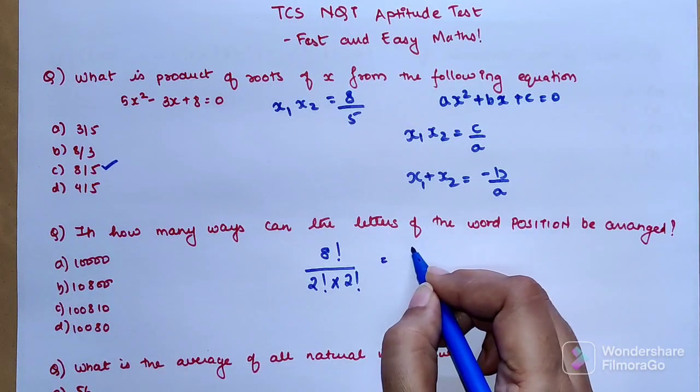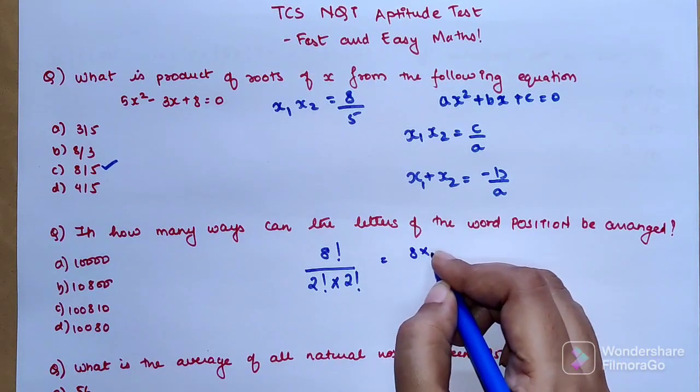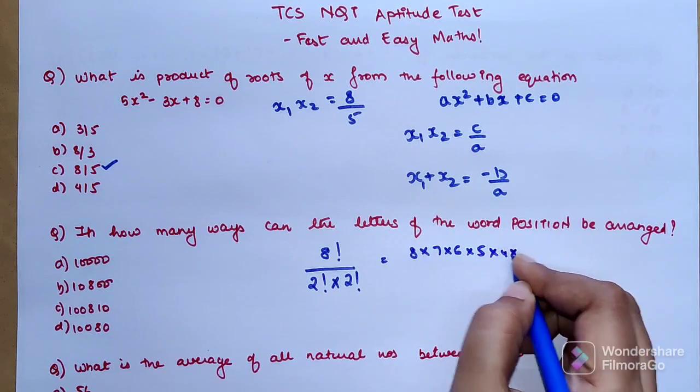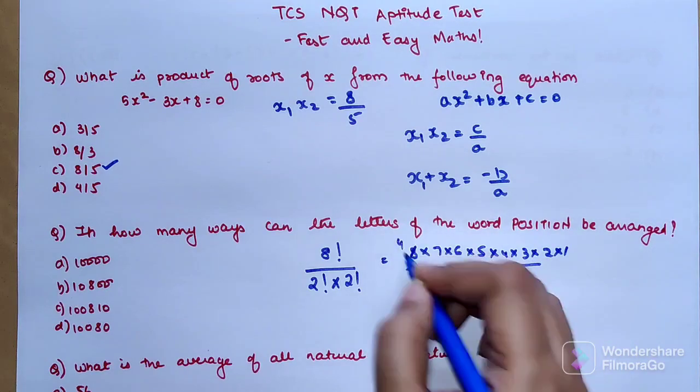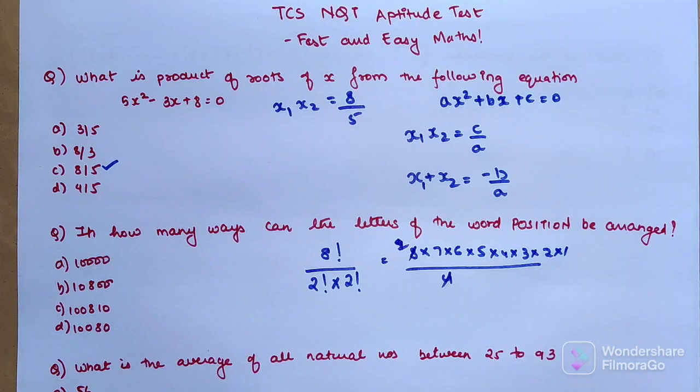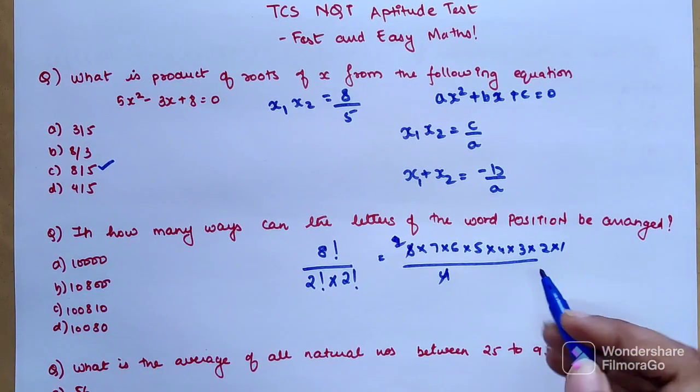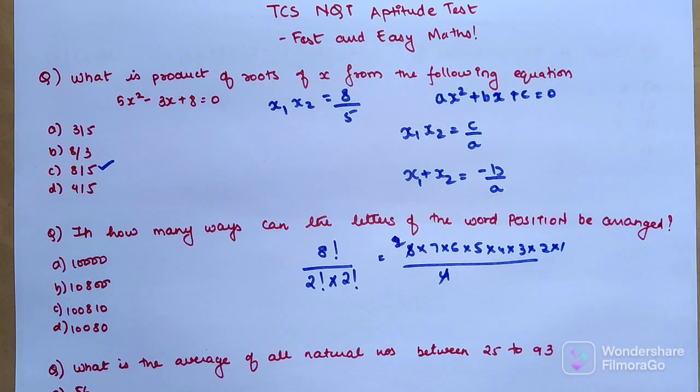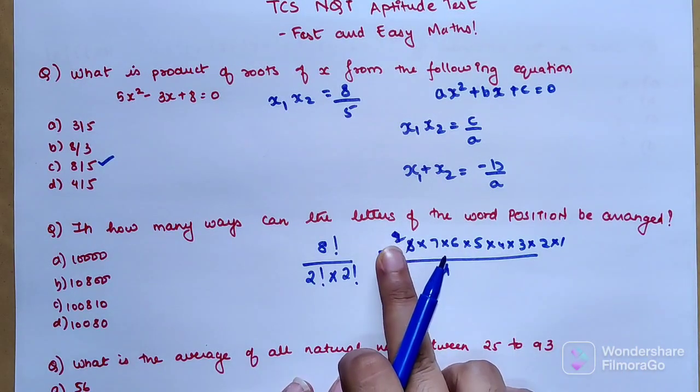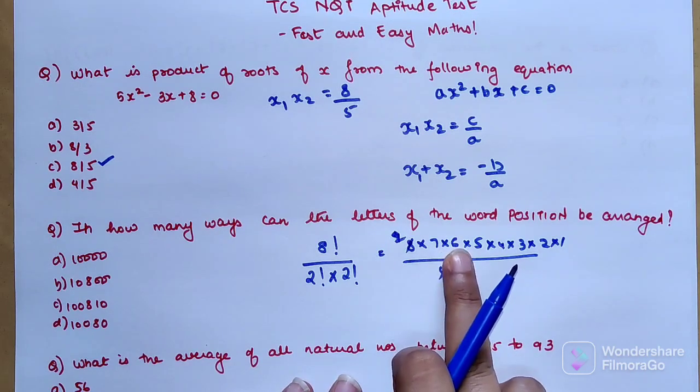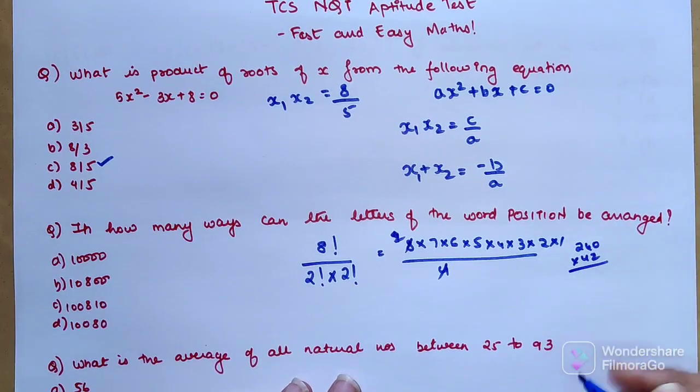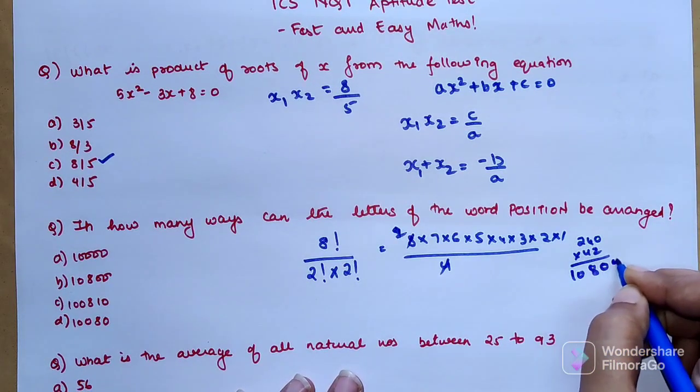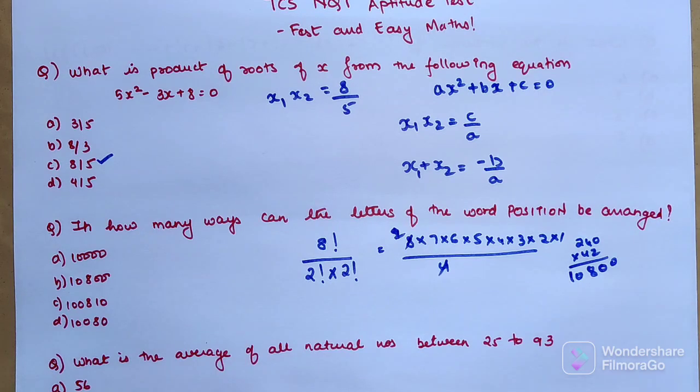So the answer is 8 × 7 × 6 × 5 × 4 × 3 × 2 × 1 divided by 4. 5! is 120, so 120 × 2 = 240, and 240 × 42 (since 7 × 6 = 42) gives you 10,080.